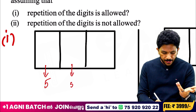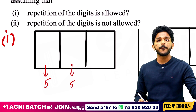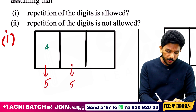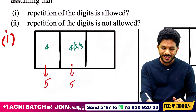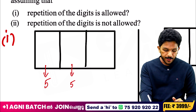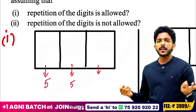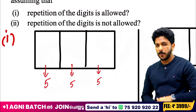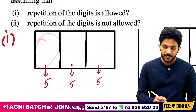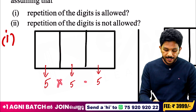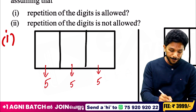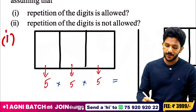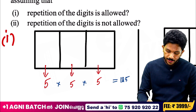For each of the 3 places, you can choose from 1, 2, 3, 4, 5 — so each place has 5 options. Therefore the total is 5 × 5 × 5 = 125.